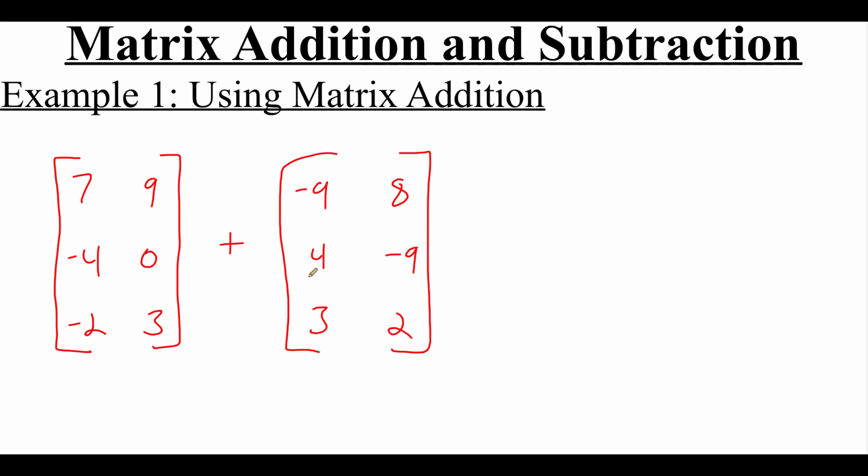So in this example, we're going to add these two matrices together. And the first thing we want to check is that they have the same order. So this first one has three rows and two columns. The second one has three rows and two columns. So yes, they have the same order.